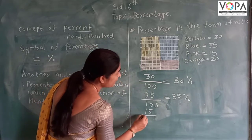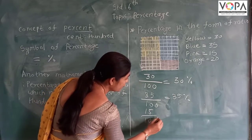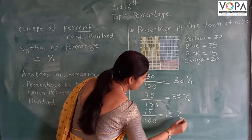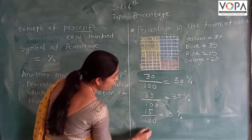Then 50 boxes are pink in color. Out of 100, 50 boxes are pink color, so we can write it as 50 percent. Then orange.